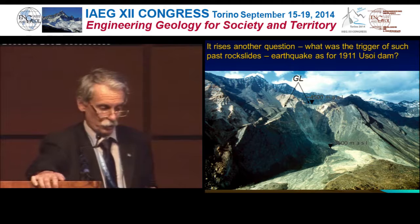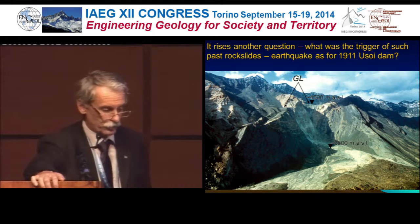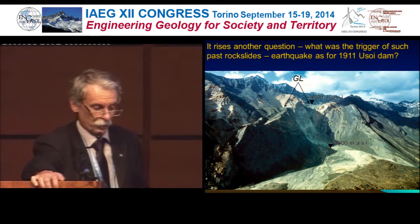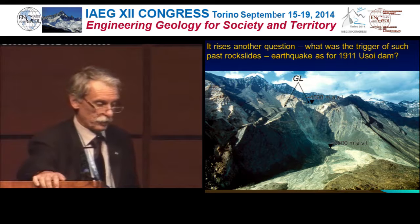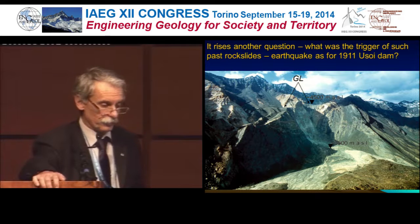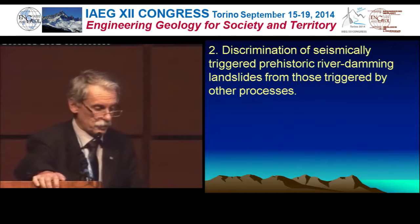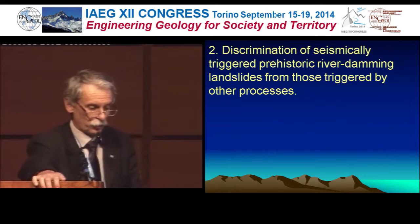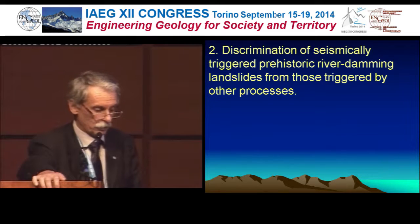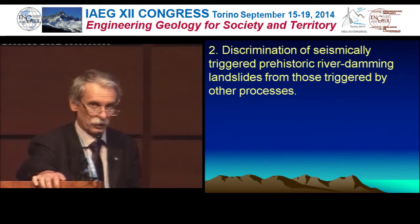This raises another question: what was the trigger of such past rock slides? An earthquake, as for the 1911 Usoi Dam — here we can see its headscarp — or something else? Discrimination of seismically triggered prehistoric river damming landslides from those triggered by other processes is a difficult task, and we can ask: is it possible at all?